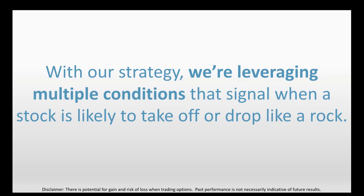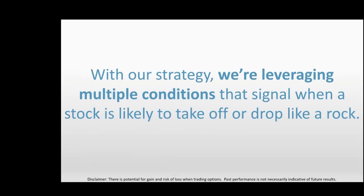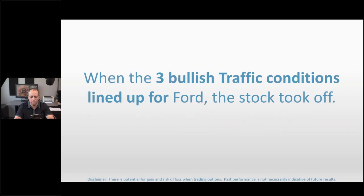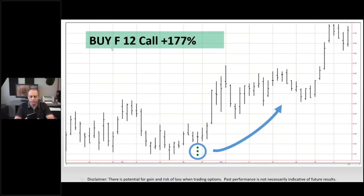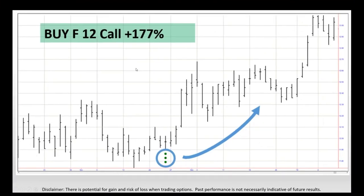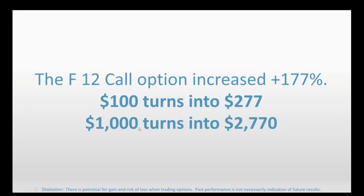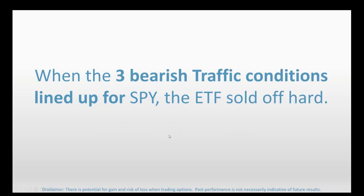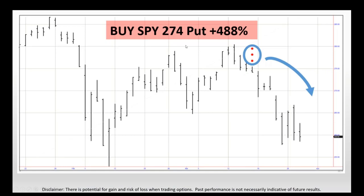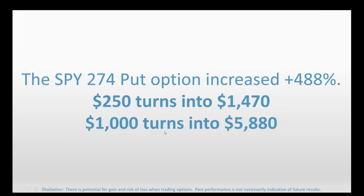We're not only interested in forecasting direction — we want to find explosive direction. When three bullish traffic conditions lined up for Ford, the stock ended up taking off, with $250 growing to $1,470 or $1,000 turning into $5,880.